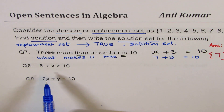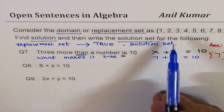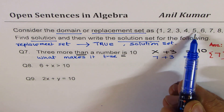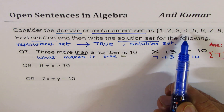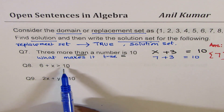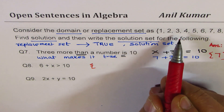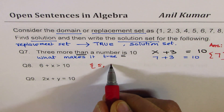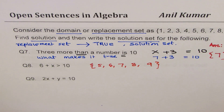Question 8: 6 plus x is greater than 10. Trying values: 6 plus 6 works, 6 plus 5 works, but 6 plus 4 equals 10 — that's equal, not greater than. So the solution set is {5, 6, 7, 8, 9}.